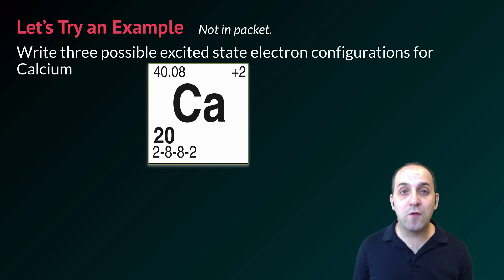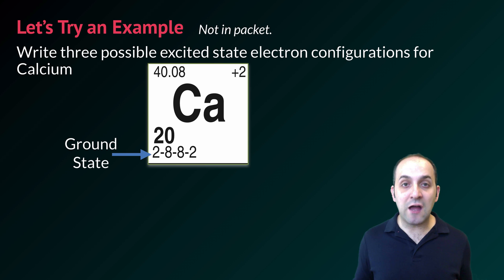It's important to remember that the configuration that we're given on the periodic table is the ground state configuration. Calcium's basic ground state configuration is 2-8-8-2. So with that in mind, let's look at some possible excited state configurations.